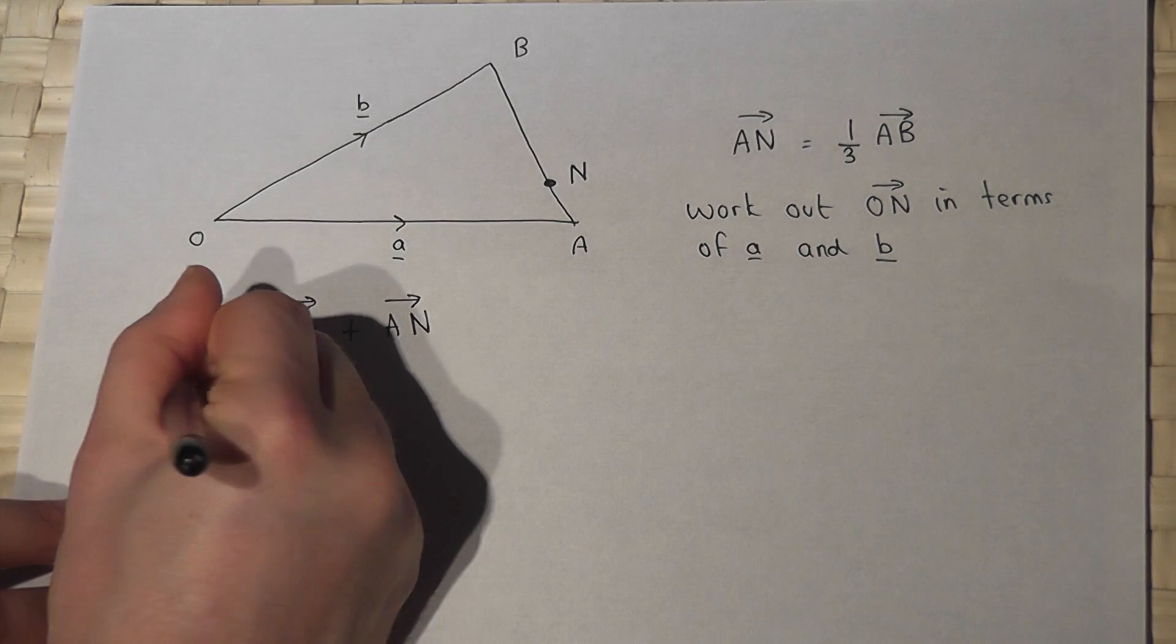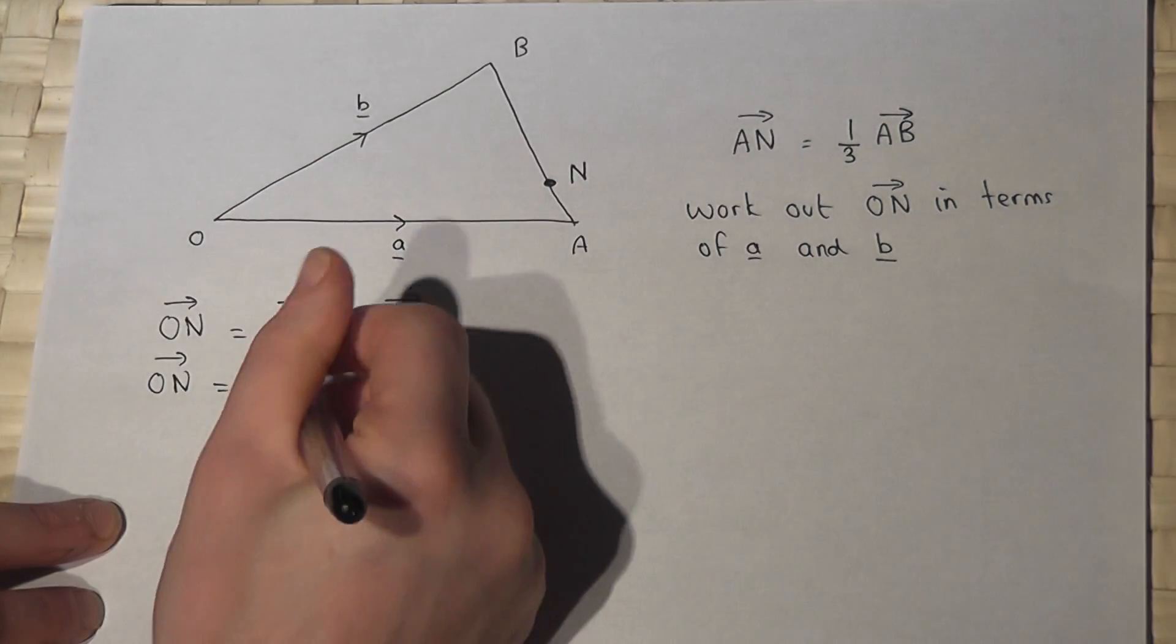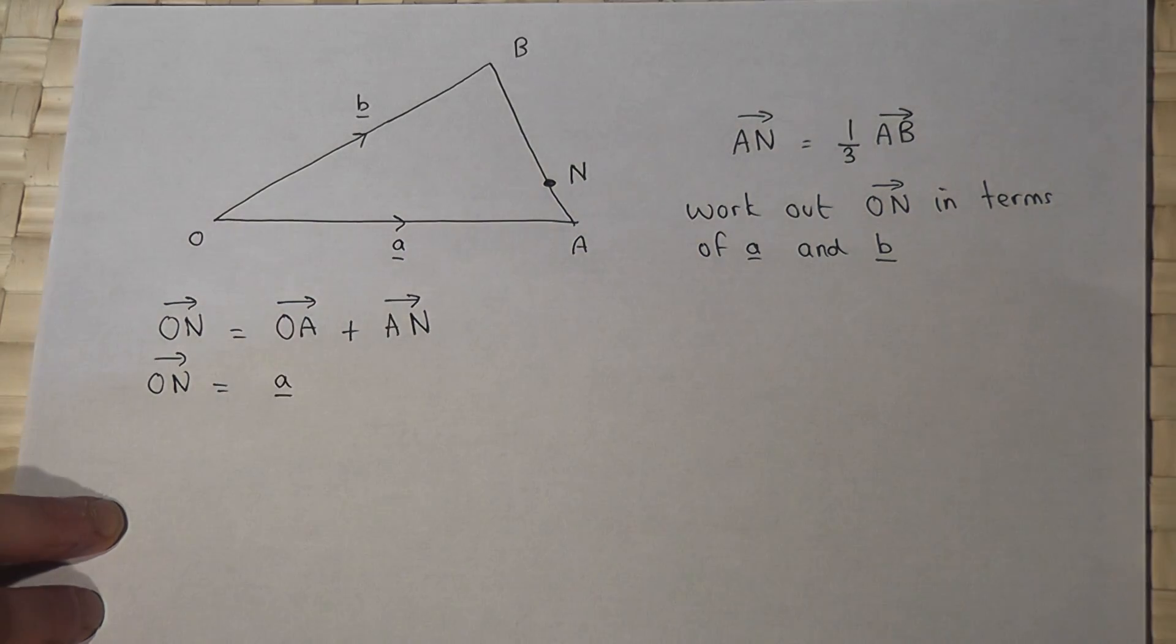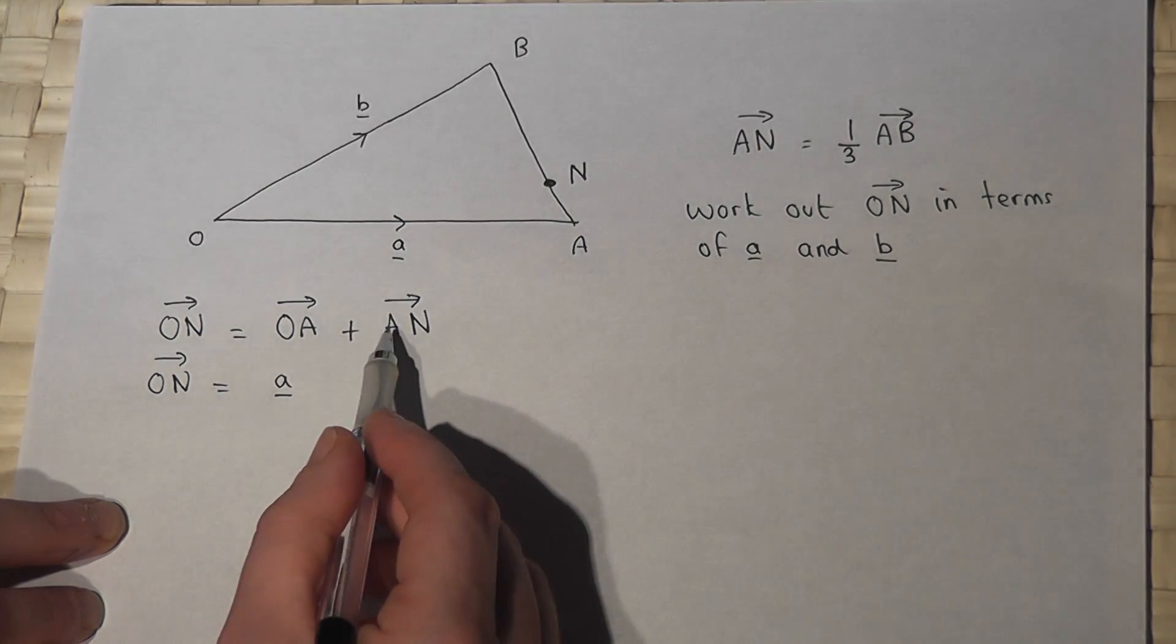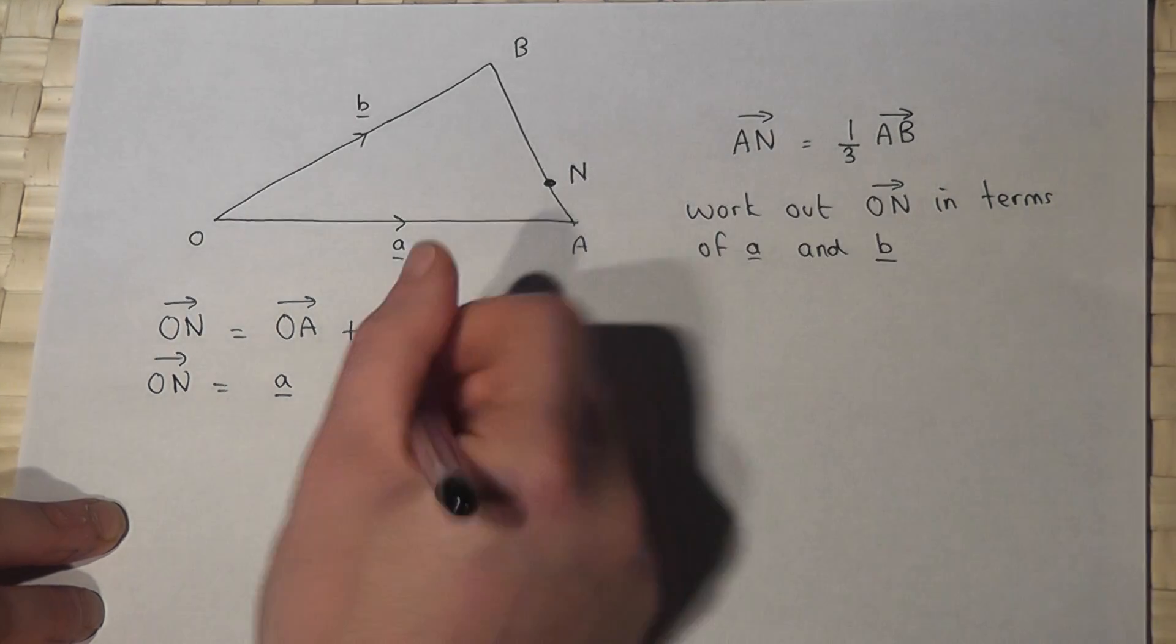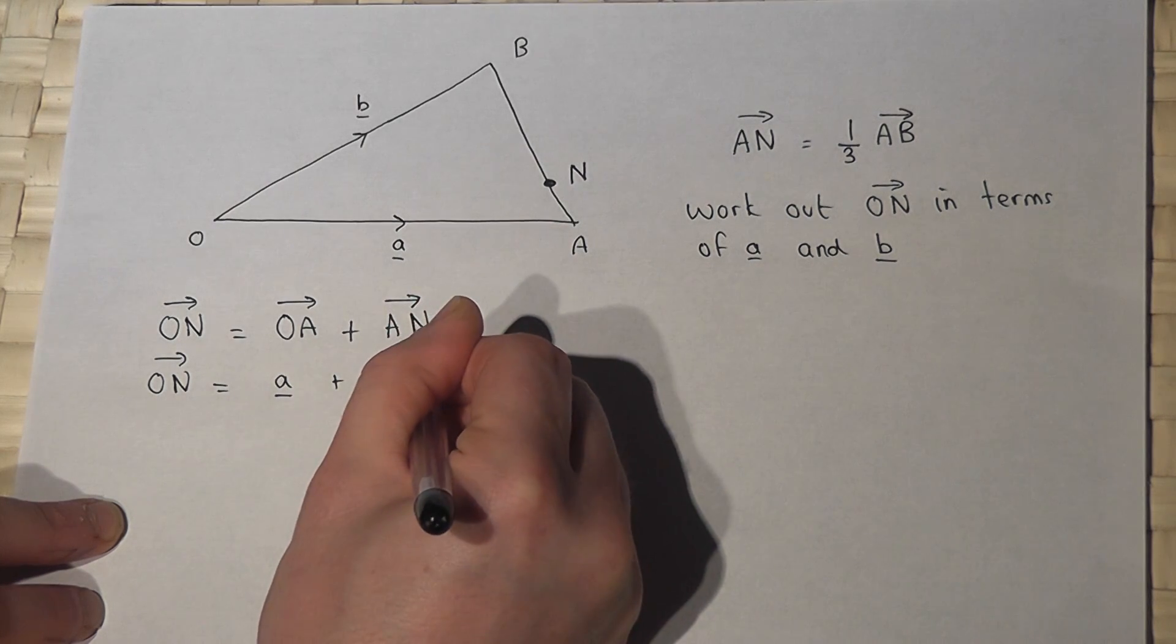Now I know that O to A is just vector A. It's this part here which requires a bit more work. A to N is just a third of A to B.